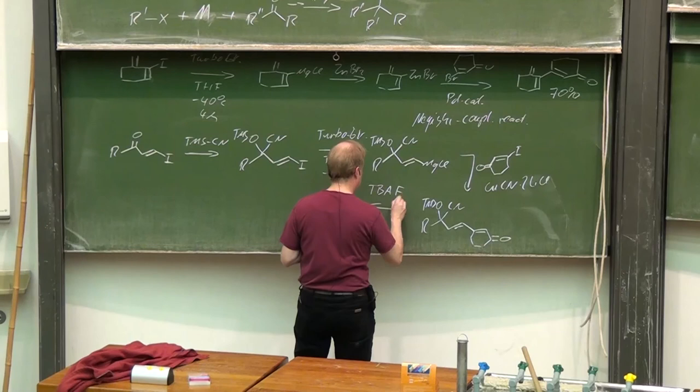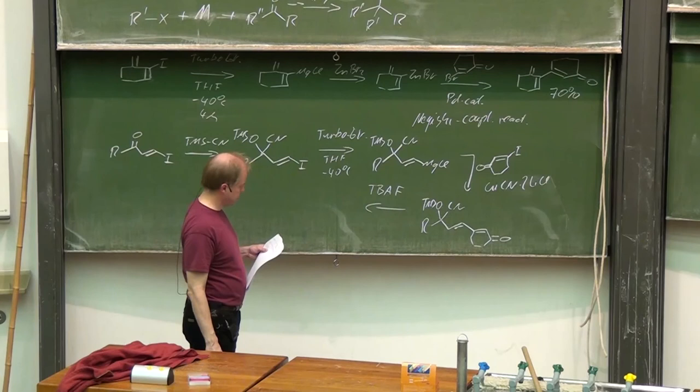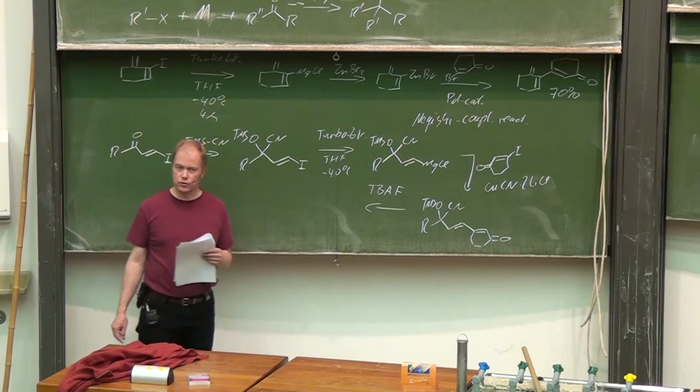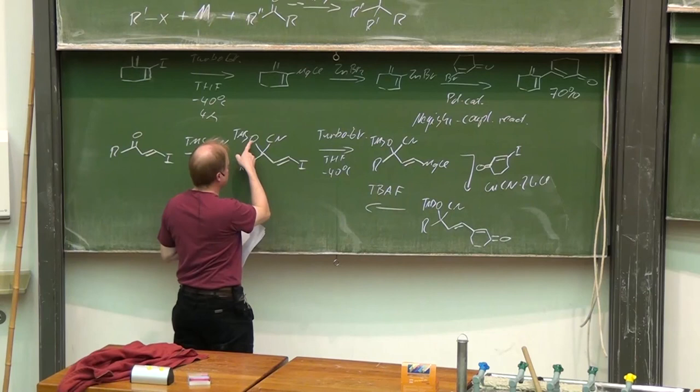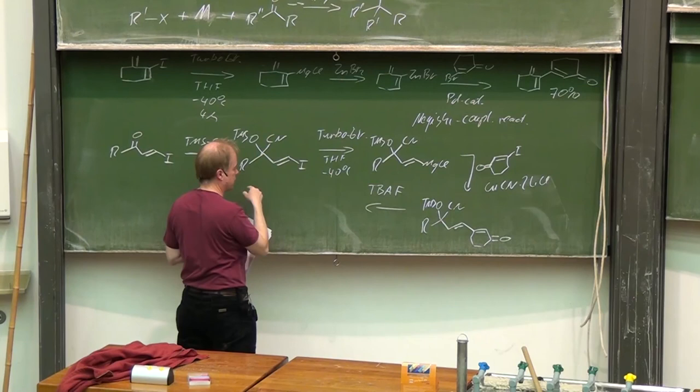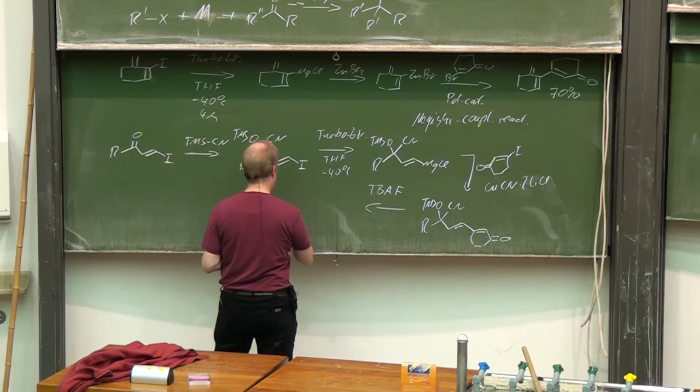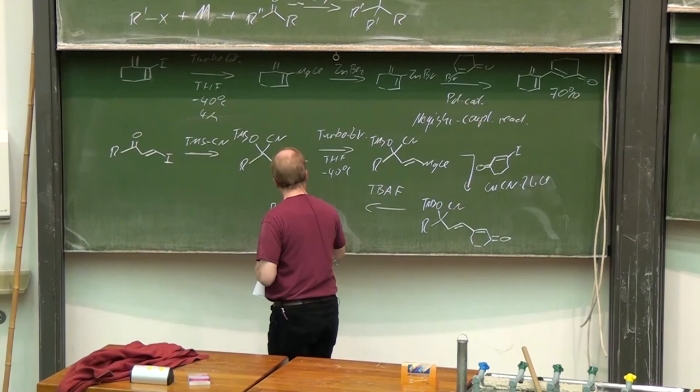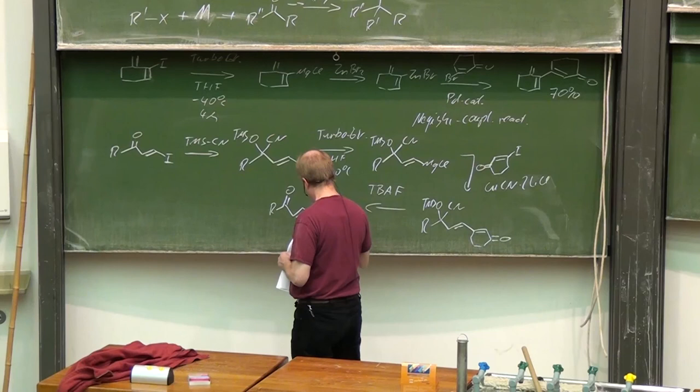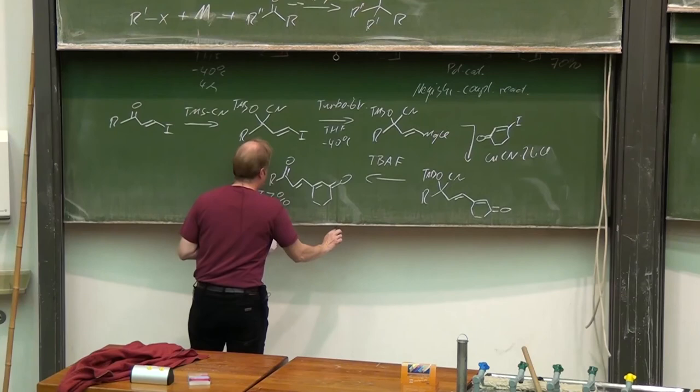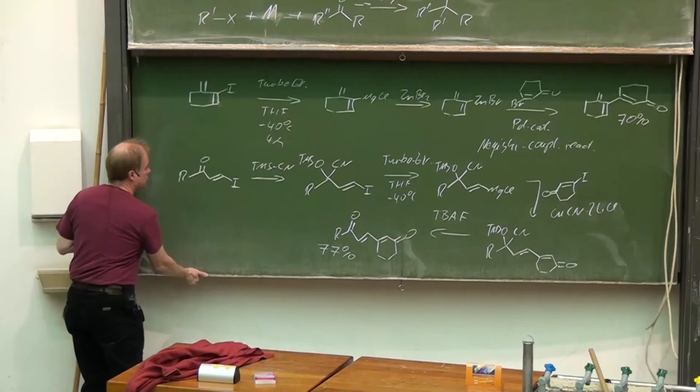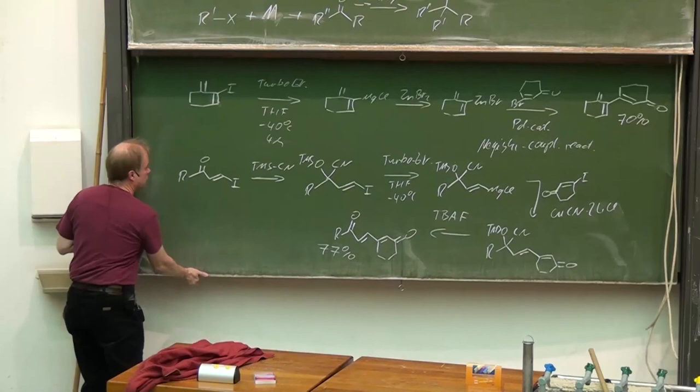Finally with the reagent TBAF, tetrabutylammonium fluoride—this is known as an excellent reagent to get rid of TMS protecting groups—the cyanohydrin is set free and decomposes, giving free the carbonyl compound again. With this as the final product, and again a very good yield of 77% for this nice multi-step process.